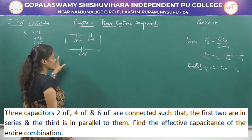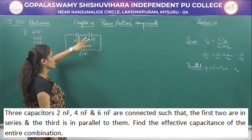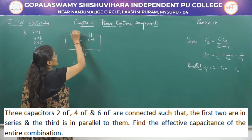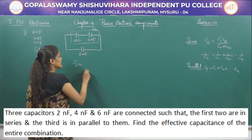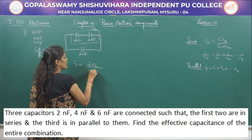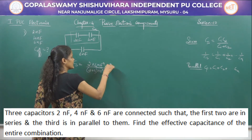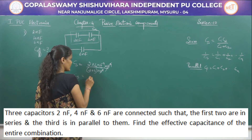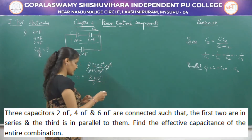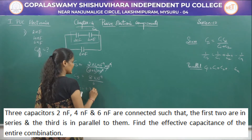We need to find the total effective capacitance of the circuit where 2 and 4 nanofarad are in series, and that combination is in parallel with 6 nanofarad. For the series part, Cs = (2 × 4) / (2 + 4) × 10⁻⁹ = 8/6 × 10⁻⁹ = 1.33 nanofarad.